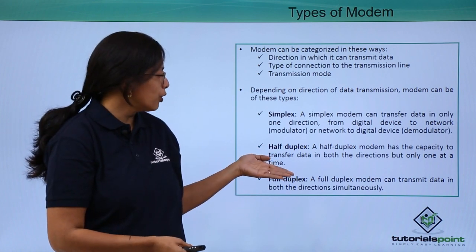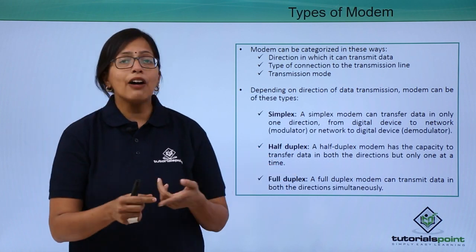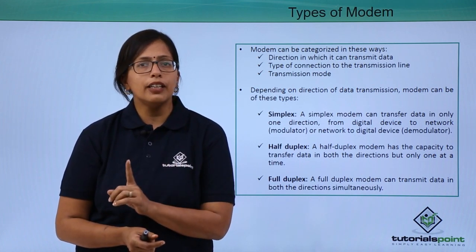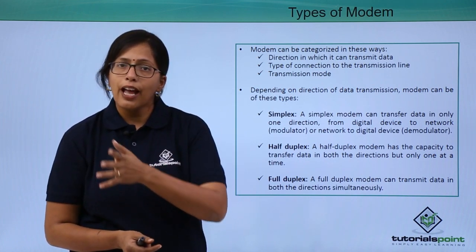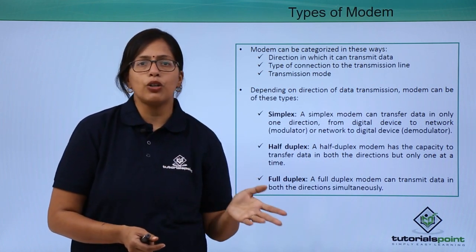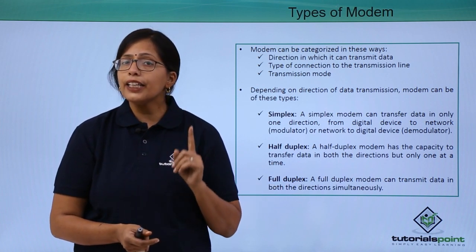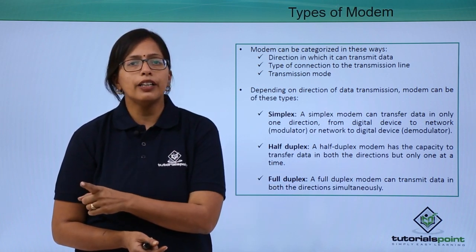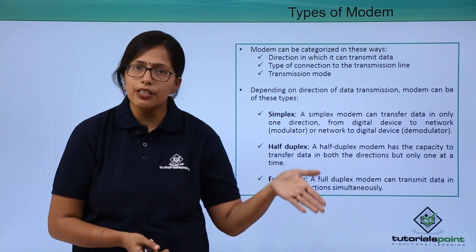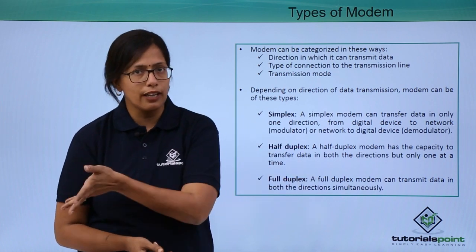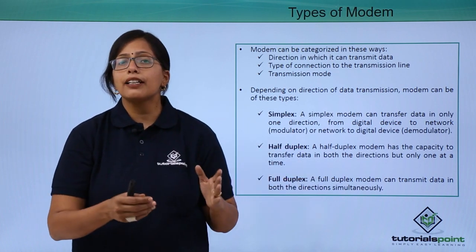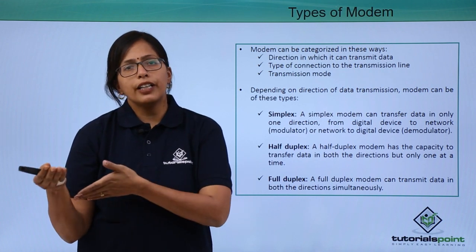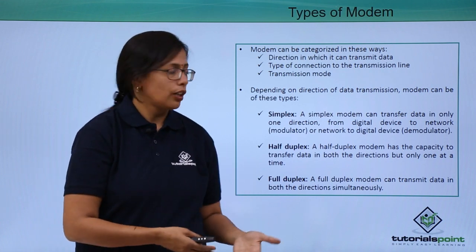In half duplex mode, the modem has the capacity to act as both a modulator and a demodulator, but at any given point in time it will act as either one — either converting digital data to analog, or converting analog data to digital.